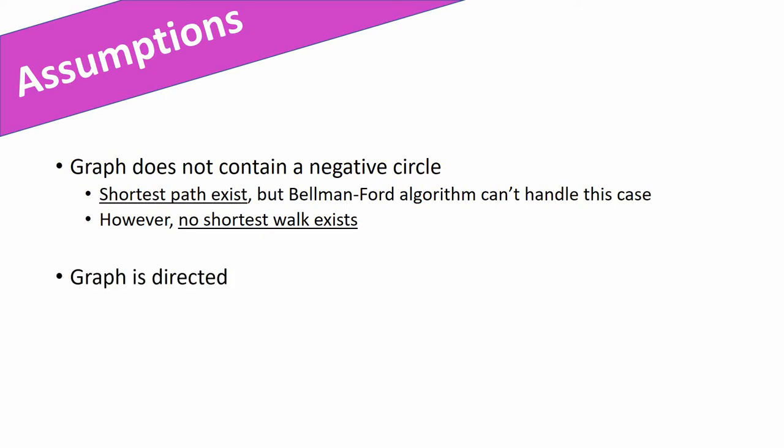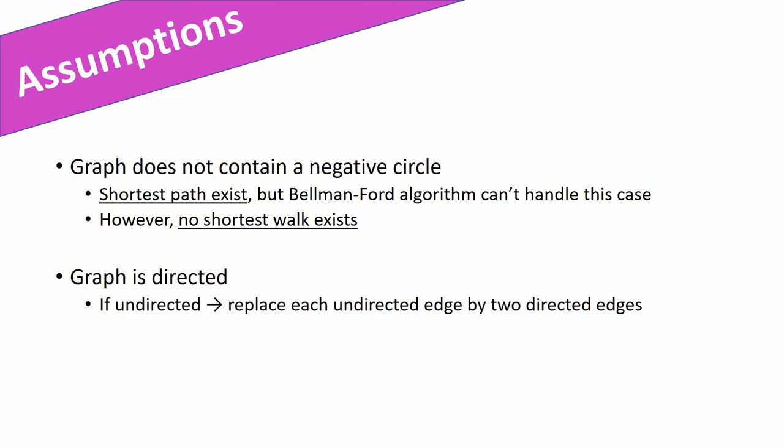Assumption number two is that the underlying graph is a directed graph. But that is not a strong assumption, because if the graph is an undirected graph we simply replace each undirected edge by two directed edges pointing in opposite directions. With that we get a modified directed graph and we can simply apply the Bellman-Ford algorithm to that modified graph.